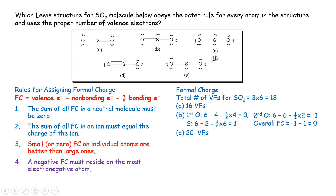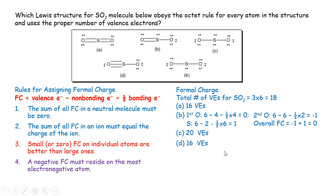For structure C, 20 valence electrons are used — that's incorrect. For structure D, only 16 valence electrons are used — also incorrect. We need exactly 18 valence electrons.